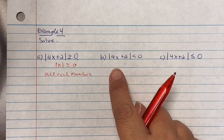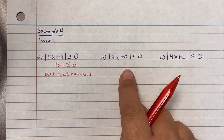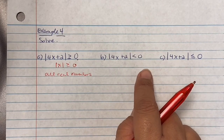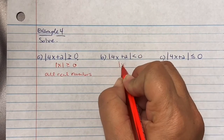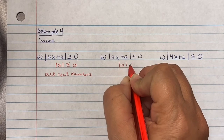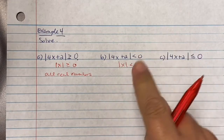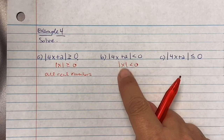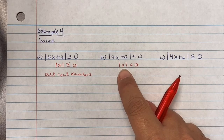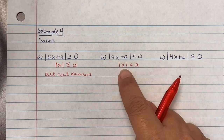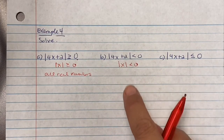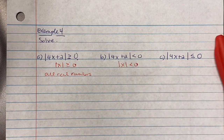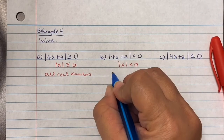Part b: absolute value of 4x plus 2 is less than zero. This is in the format of absolute value of x less than zero. Any number plugged in — positive or negative — will come out positive after applying the absolute value, and will always be greater than zero, never less. So this is no solution.